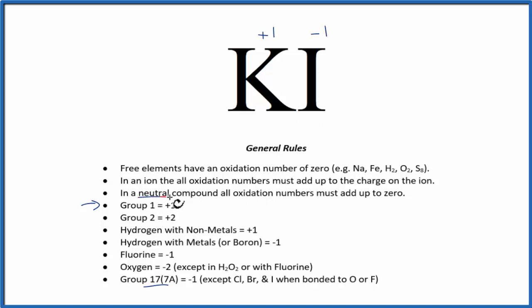We also know that if we have a neutral compound, that's a compound that doesn't have a plus or minus out here, all the oxidation numbers are going to add up to 0. Plus 1 and minus 1, that adds up to 0. That makes sense.